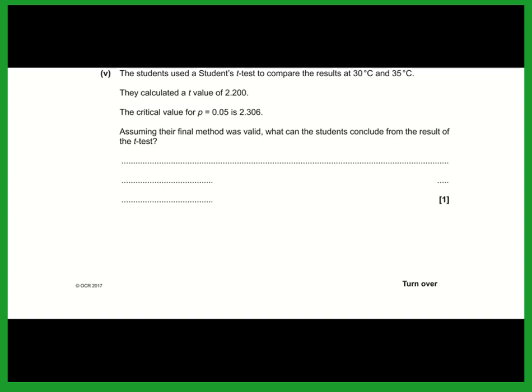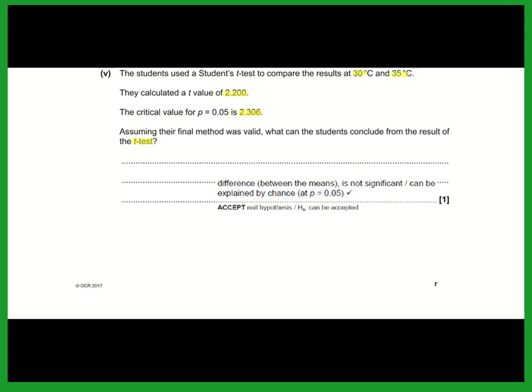Students used a t-test comparing results at 30°C and 35°C, calculating a t-value of 2.2. The critical value for p = 0.05 is 2.306. Since the calculated t-value is lower than the critical value, they cannot conclude a statistically significant difference between the results at 30°C and 35°C. Any difference can be explained by chance. They accept the null hypothesis: the results are not statistically significantly different.